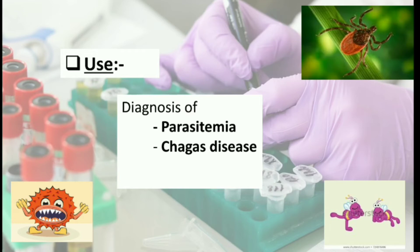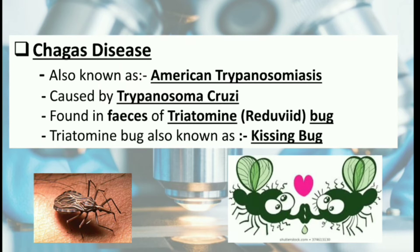In this slide, we came across a new term — Chagas disease. So in the next slide, we will understand what is Chagas disease. Chagas disease is caused by a parasite known as Trypanosoma cruzi, and because of this it is also known as American trypanosomiasis. This parasite Trypanosoma cruzi is found in the faeces of the triatomine bug, also known as the reduviid bug or kissing bug, which we can see in the picture given below.